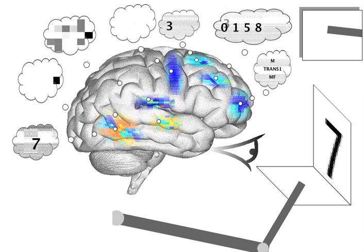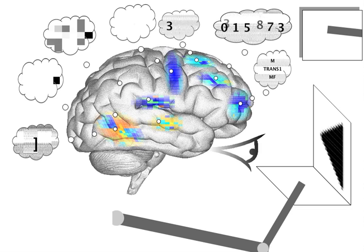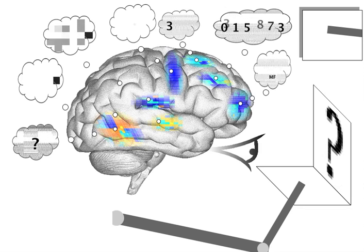As we watch Spawn encode this list, I should note that the darkness of the letter in the thought bubble indicates how well that item can be decoded from the current neural representation. As you can see, the 8 in the middle of this list is beginning to fade, indicating that it's being forgotten by the model.